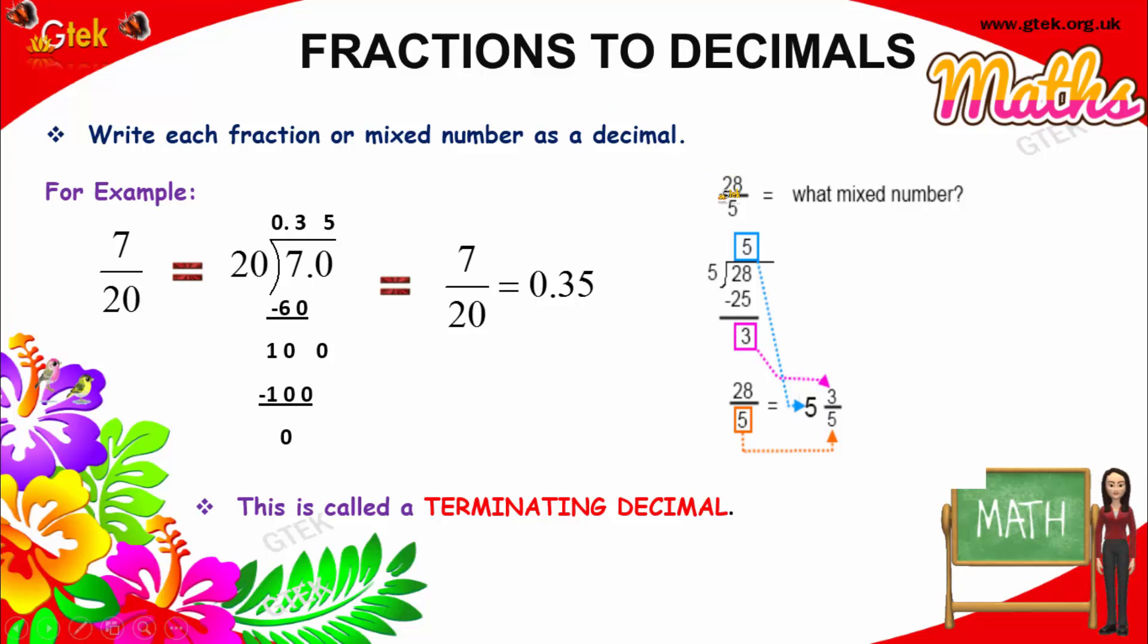28 divided by 5. So obviously, 5 times 5 is 25. 6 times 5 is 30, which is more than 28, so I will go with 5. 5 times 5 is 25. 28 minus 25 is 3. In this case, I will write 5.